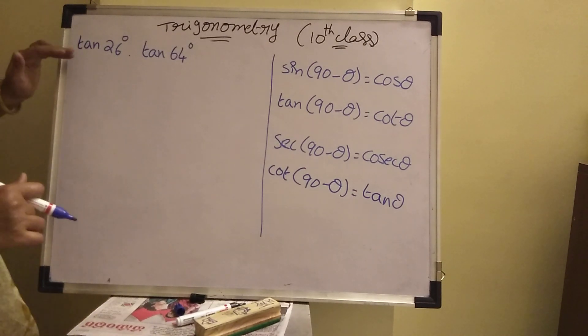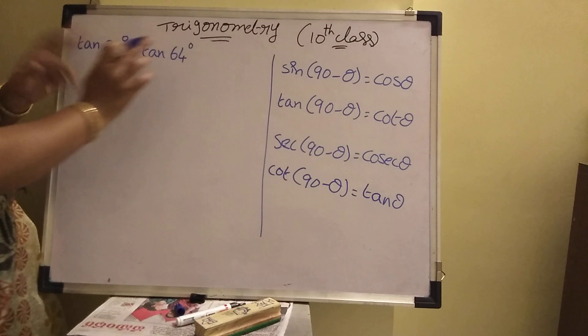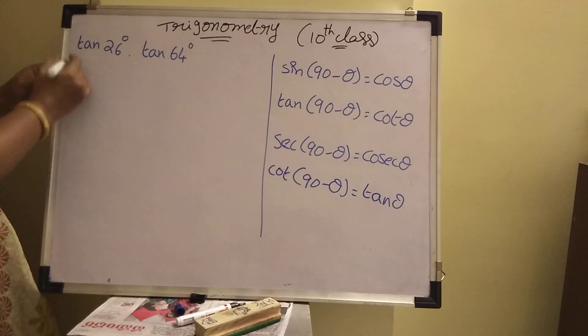See here, one more sum is there. Tan 26 degrees into tan 64 degrees. Then how will you find this value? Here also, both add them, we'll get 90. Then change any one function.